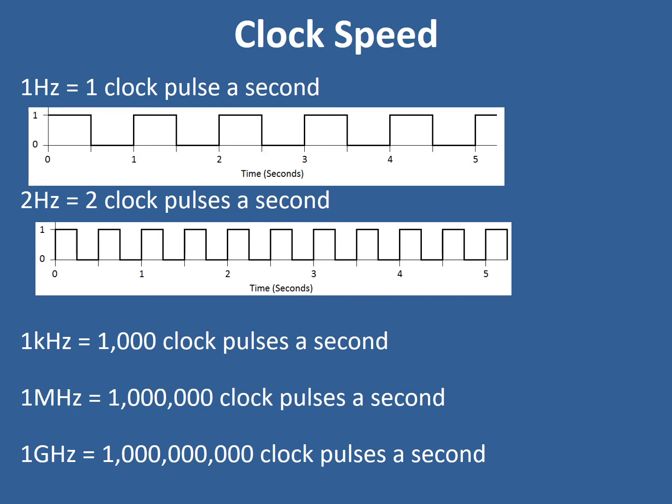Modern computers use a lot more than two clock pulses per second. Remember, with each of those pulses there's a fetch, decode and execute cycle happening. Modern computers use clock speeds within the gigahertz range, around three gigahertz. That means three million pulses every second — three million fetch, decode and execute cycles per second.